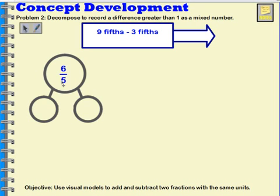So 6 fifths, I can see that if I had 5 fifths, I would have 1 whole. So that 5 fifths is equal to 1. And then the other part would be 1 fifth.